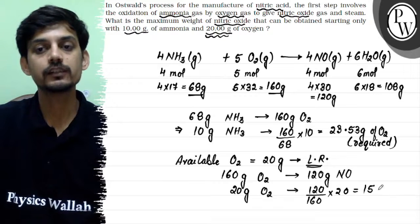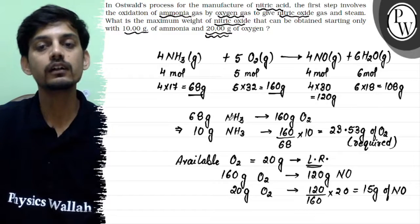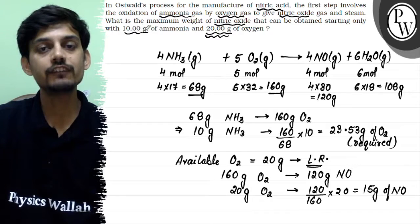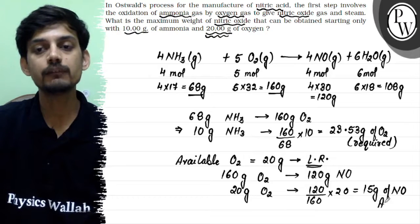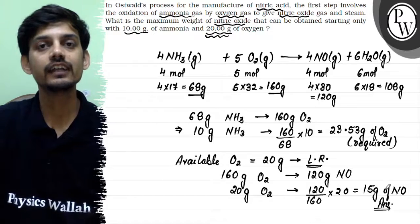So in the given reaction, when 10 grams of ammonia are being oxidized with 20 grams of oxygen, some of the ammonia will be left over and only 15 grams of nitric oxide will be produced according to the oxygen. So this will be the answer for the given question. Hope this clears your question. Best of luck, thank you.